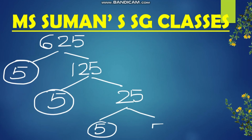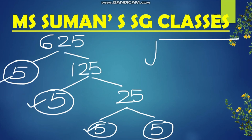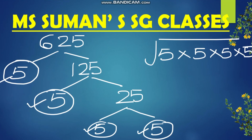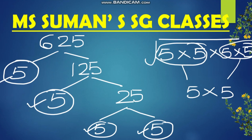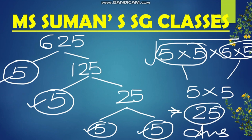Now inside our home we have four 5s. We make one pair of 5s and a second pair of 5s. One member from the first pair comes out, and one from the second pair comes out. Should we write the square root sign? No — because we already made pairs and brought one member of each outside. So 5 times 5 is 25. The square root of 625 is 25.